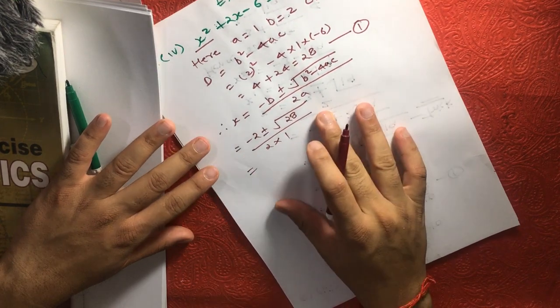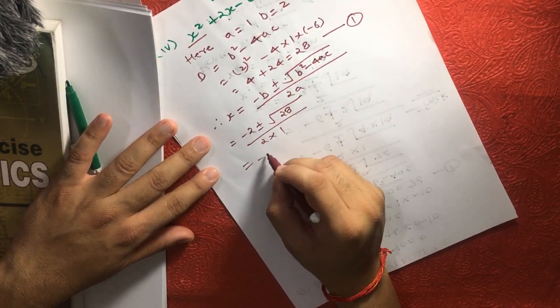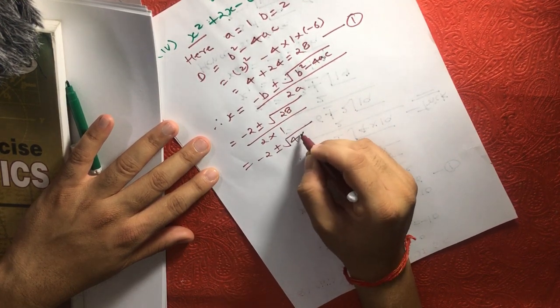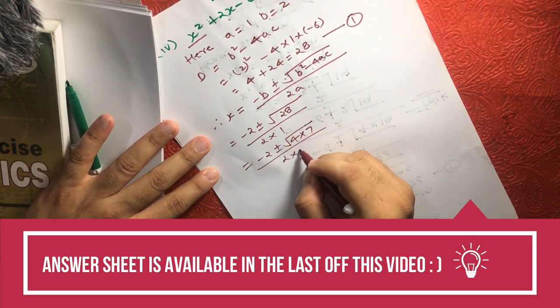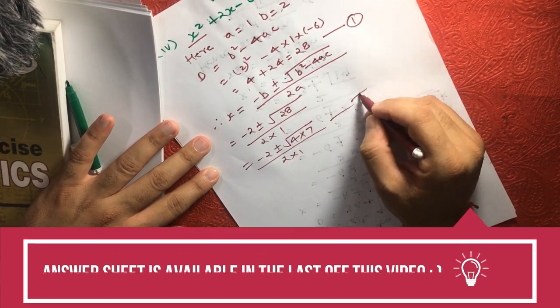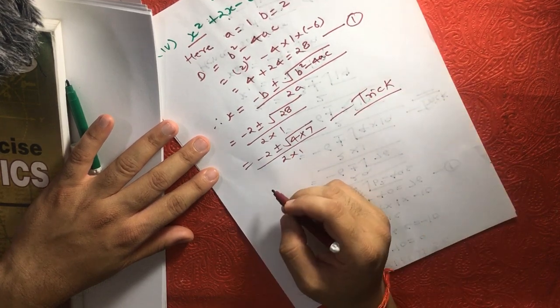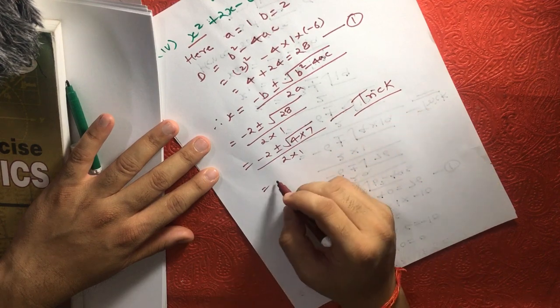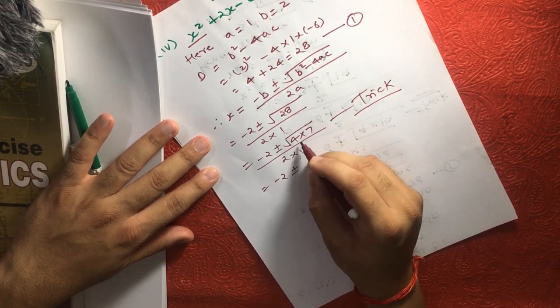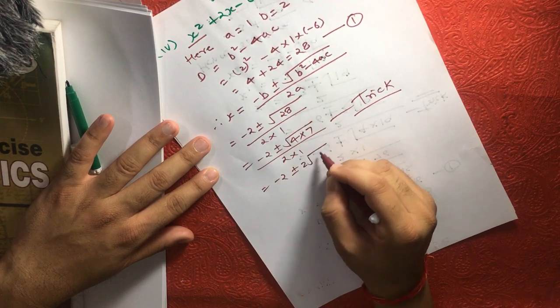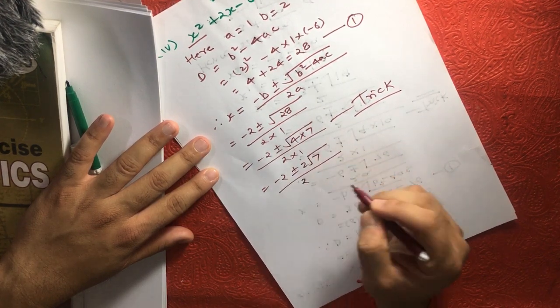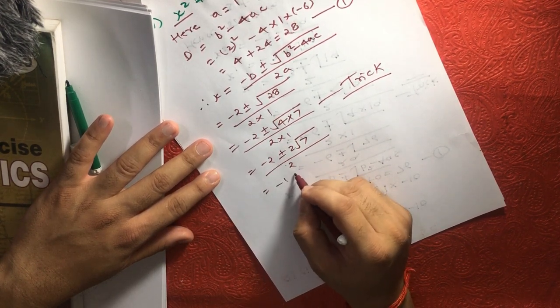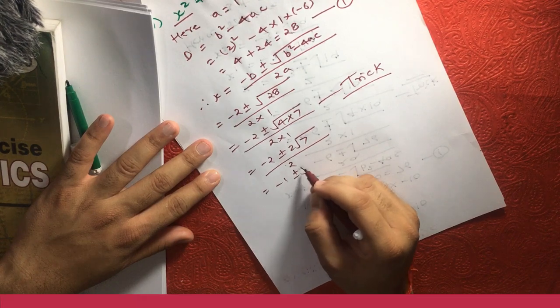Now this kind of equation we can solve: minus 2 plus minus square root of 4 into 7. Friends, this is the trick you need to understand while solving this kind of equation. Square root of 4 is 2, we can put it outside, and then that is 7 divided by 2. If we divide this further, this will become minus 1 plus minus square root of 7. So this is your x value.